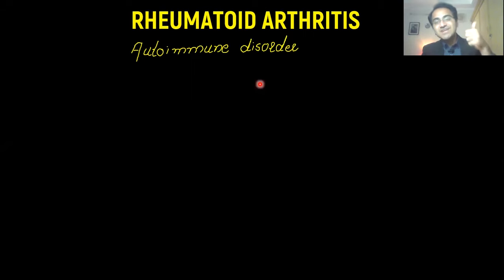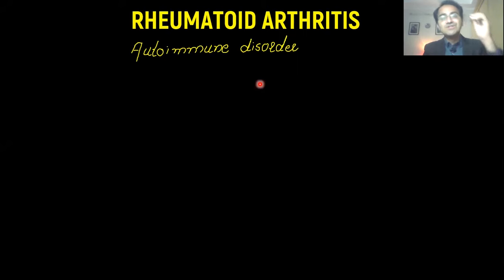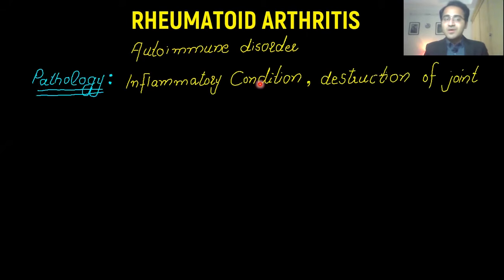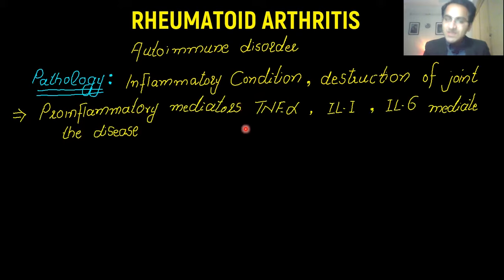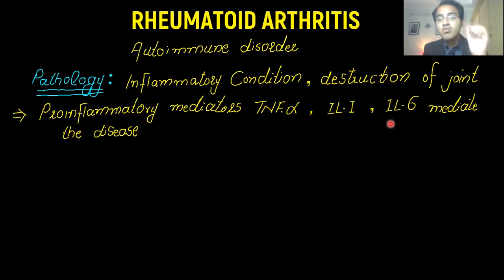Rheumatoid arthritis is basically an autoimmune disease that causes destruction of the joints — the body's immune system destroys its own joints. It is an inflammatory condition, and since it is inflammatory, there will be inflammatory mediators causing this destruction. Inflammatory mediators produced by the immune system like TNF-alpha, IL-1, and IL-6 are the most important mediators that cause and mediate rheumatoid arthritis.